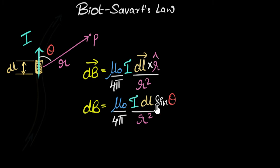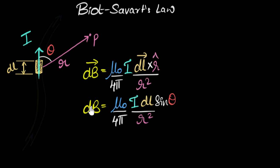We also see that dB depends upon dL, the length of the current element. That's because if you took a longer current element, you would have more moving charges in it, so the magnetic field is due to more moving charges. If you have double the dL, you have double the number of moving charges, and so you'll have double the magnetic field.